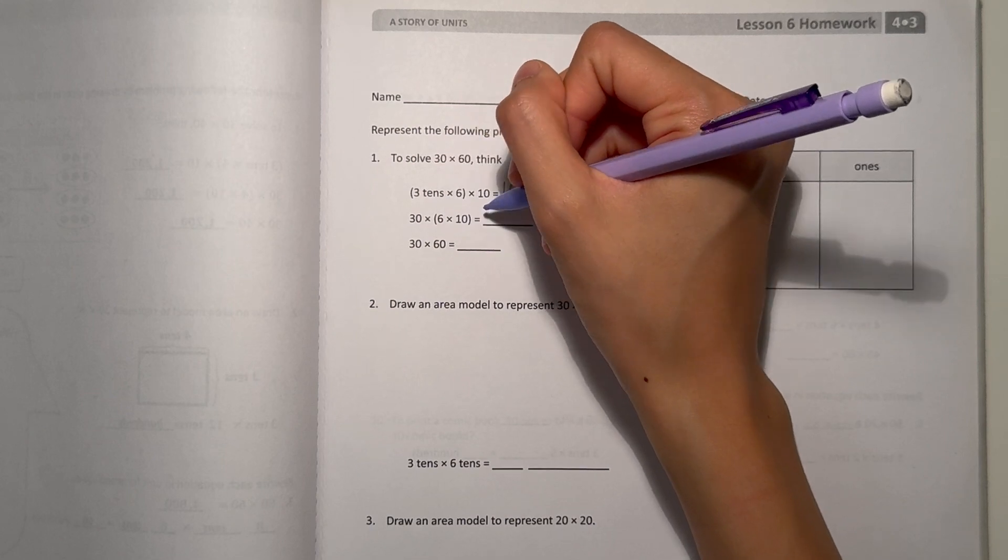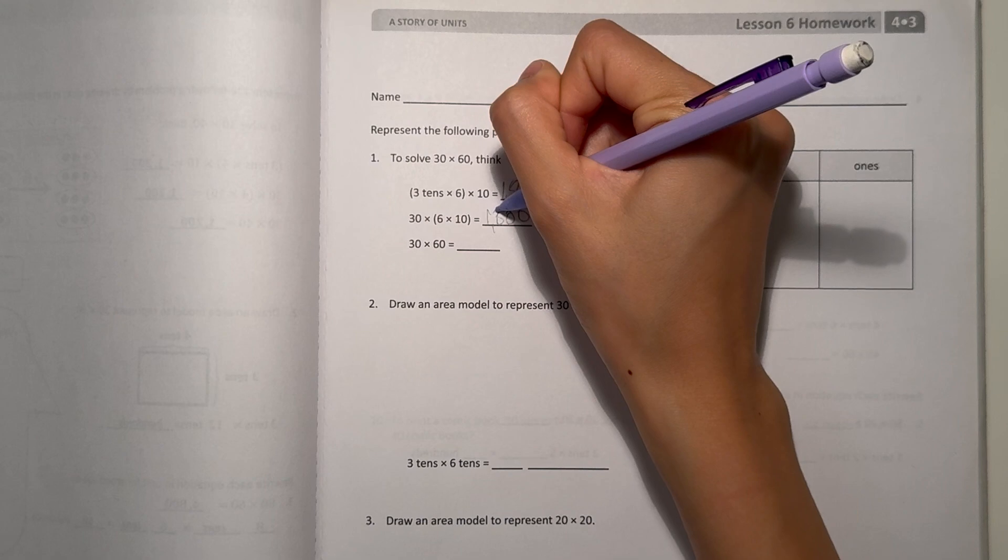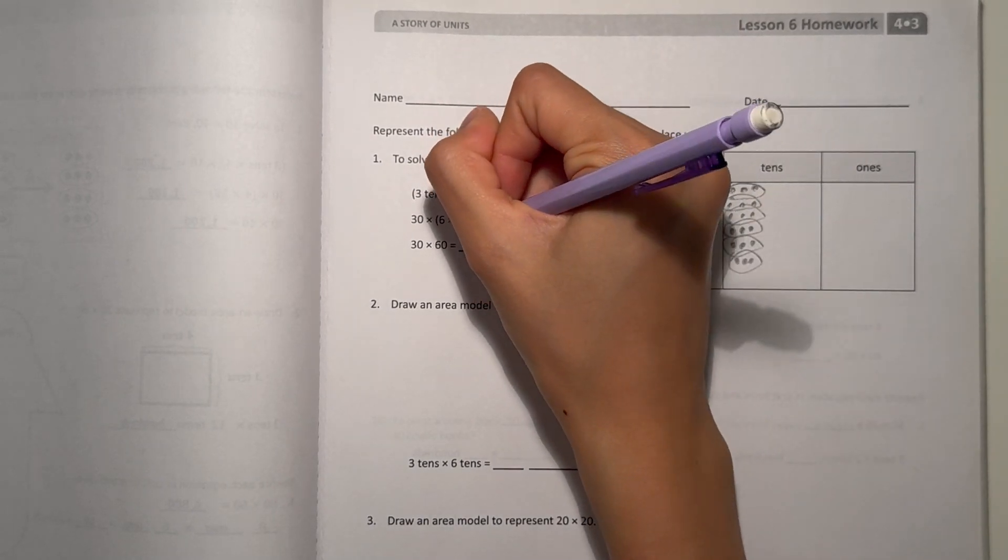And here, 30 times 6 times 10, that's the same, so 1,800. That means 30 times 60 is 1,800.